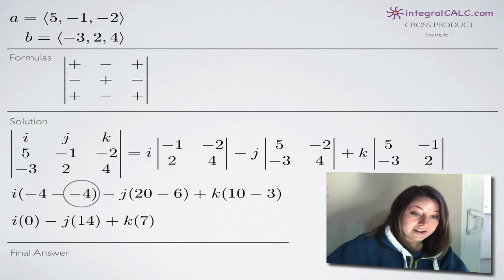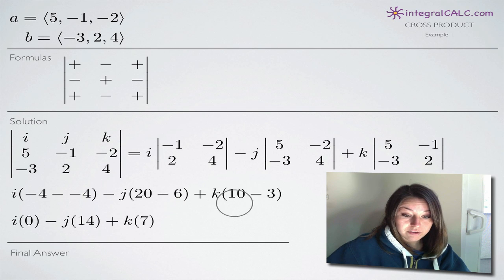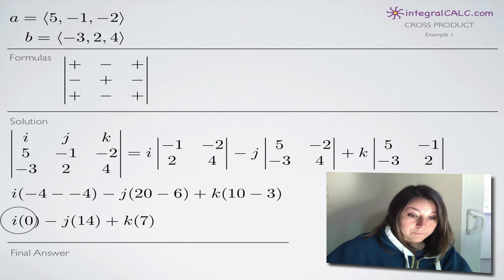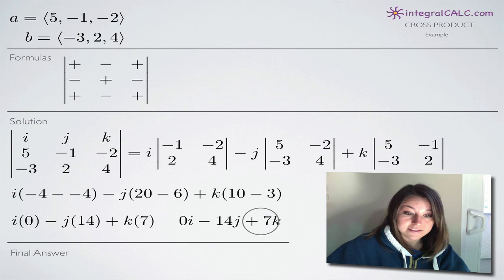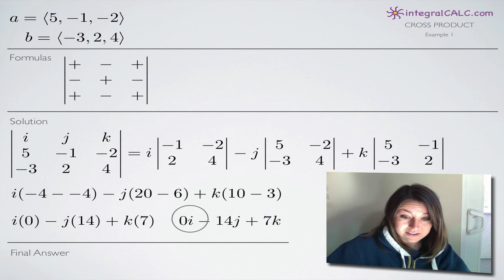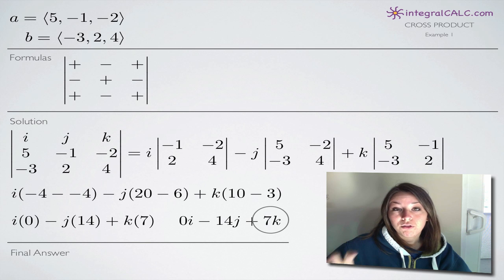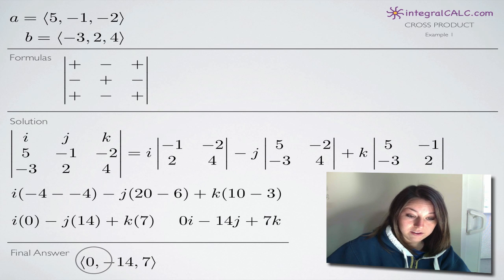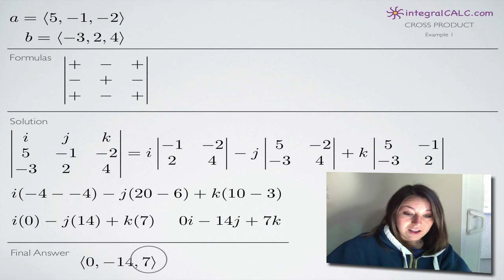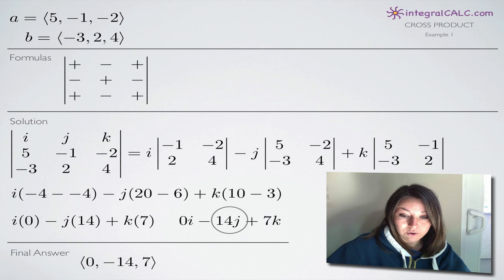Simplifying: for i, -4 minus (-4) equals 0. For j, 20 minus 6 equals 14, so we get -14j. For k, 10 minus 3 equals 7. So the result is 0i - 14j + 7k. The coefficients 0, -14, and 7 are the three direction numbers composing our cross product. The final answer is the vector (0, -14, 7).